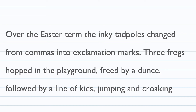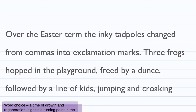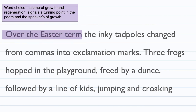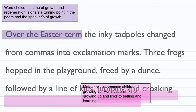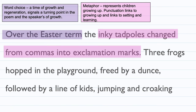The poem goes on to say: 'over the Easter term, the inky tadpoles change from commas into exclamation marks. Three frogs hopped in the playground, freed by a dunce, followed by a line of kids jumping and croaking.' The word choice of 'over the Easter term' signals a time of growth and regeneration. Easter signals a turning point in the poem as the speaker grows. When you think about Easter — daffodils, lambs — it's a place of birth and growing up, just as this poetic speaker seems to grow up over the Easter term.